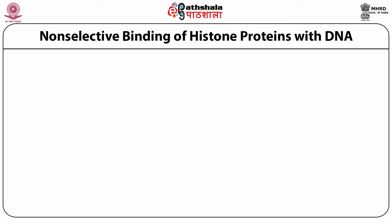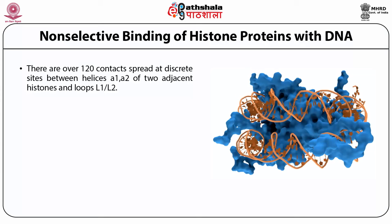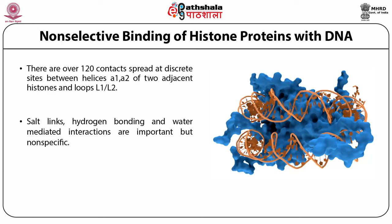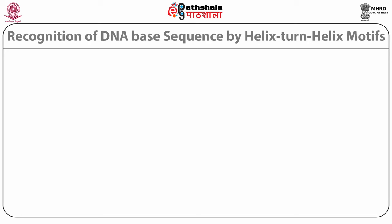Many proteins have non-selective binding with DNA. We have already gone through the example of histone-DNA interaction. The picture shows DNA binding to histone proteins in the nucleosome. There are over 120 contacts between protein and DNA, unevenly spread between helices alpha-1 and alpha-2 and L1 and L2 loops. There are many source links, hydrogen bonding and water-mediated interactions, and these are important but all of them are non-specific.